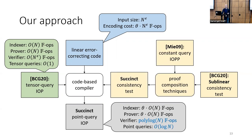We addressed this by applying proof composition techniques to improve the efficiency of this consistency test. Once we fed this new improved consistency test into our compiler, we were able to get the verifier complexity we wanted. We also had to add zero-knowledge to the ingredients in our construction. We made the original tensor query IOP zero-knowledge, and we constructed special zero-knowledge linear error-correcting codes with the right efficiency properties. This was enough to make our final construction zero-knowledge.